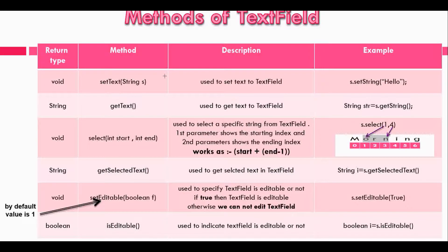After the constructors, let's see the methods of TextField. The very first method is setText() with a String parameter — it is used to set text to the TextField and can be used like this. The next method is getText(), used to get text of the TextField. The return type is String, and it is used like this.